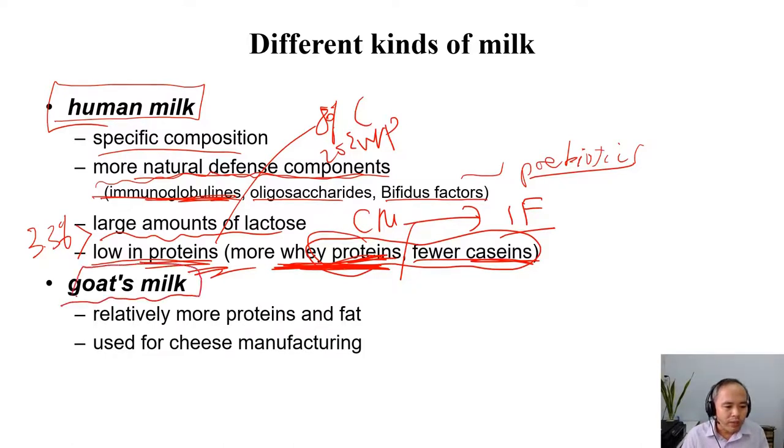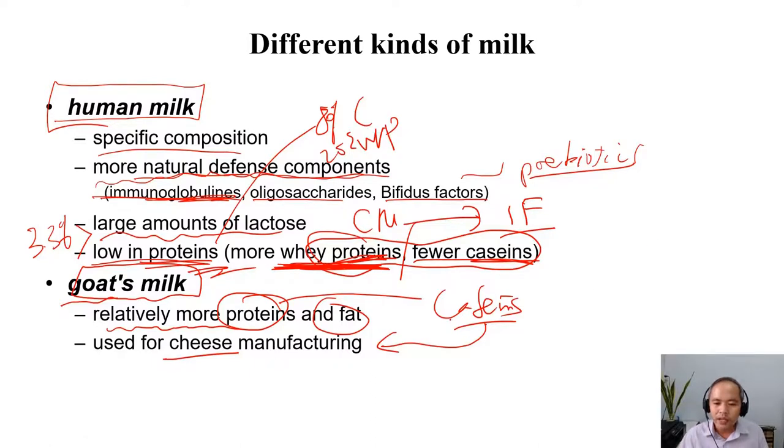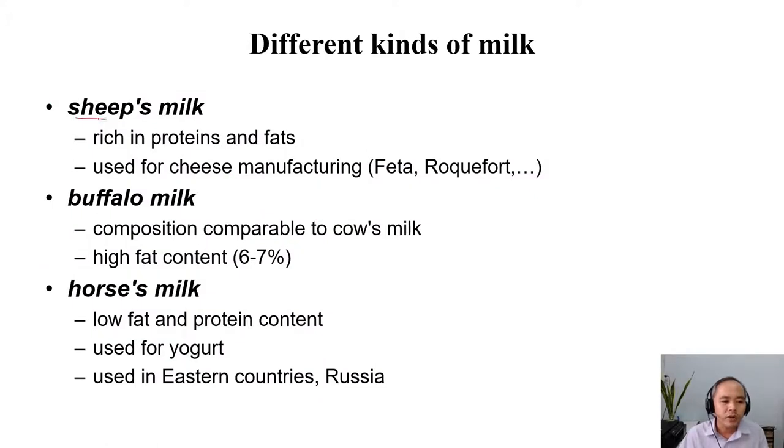And then for cow milk, cow milk is quite rich or relatively rich in proteins and fat. When they are rich in protein, especially they are rich in casein protein, then the milk is suitable to make cheese. Because in making cheese, you coagulate casein. You precipitate this protein to form the cheese. So if the milk has rich content of casein, then it's good for making cheese. Sheep milk is also quite rich in proteins and fat compared to cow milk, then it's also suitable for processing cheese. Buffalo milk has a quite similar composition as cow's milk composition, but has much higher fat content.